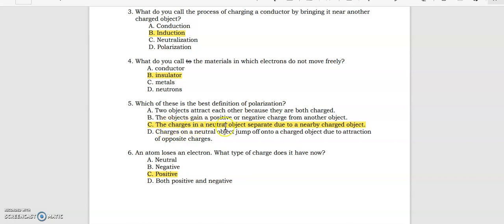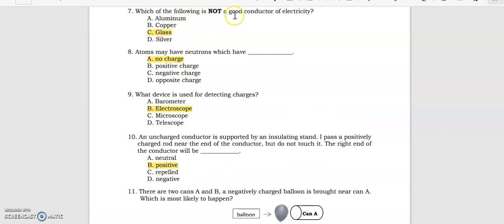Which of these is the best definition of polarization? It's the charges in a neutral object separate due to a nearby charged object. An atom loses an electron. What type of charge does it have now? Positive.